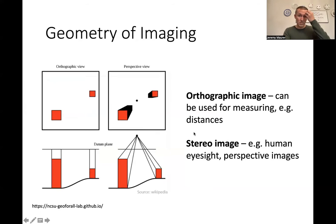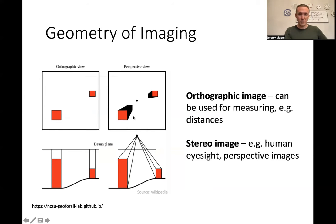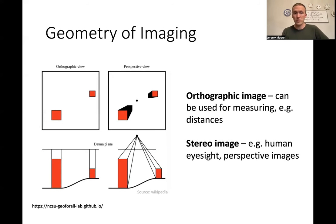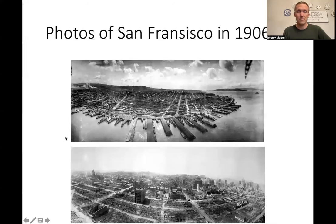We can see this in a top-down view of a couple of square buildings in perspective. This is what we would see if we were viewing these buildings from up above, which is what our drone camera would see as well. But an orthographic view would be a straight-down view everywhere.